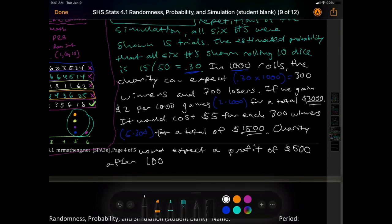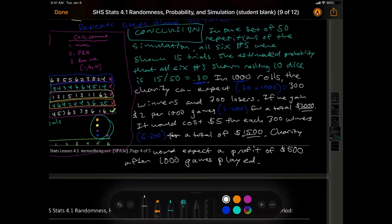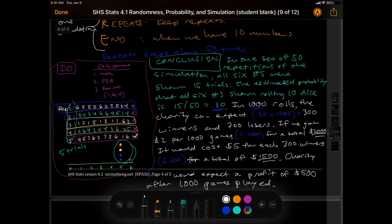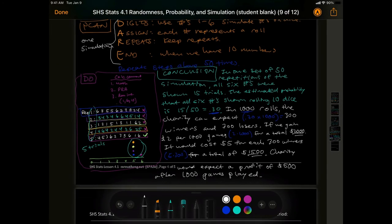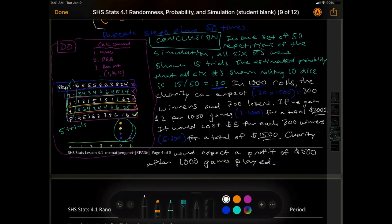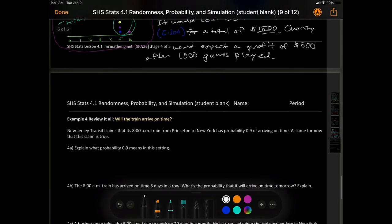Okay so what happens if we did this over one thousand rolls. In 1,000 rolls, the charity can expect 0.30 times 1,000 would give us 300 winners. But of the 1,000, that means 300 are winners and then that would be 1,000 minus 300 would give us 700 losers. So if we gain or if they gain $2 per the 1,000 games. So that would be 2 times 1,000 would give us for a total of $2,000. So that's our profit. It would cost $5 for each 300 winners. So my math on that one is going to be 5 times 300 would give us how much? For a total of $1,500. Charity would expect a profit of how much? 2,000 minus 1,500 would give us $500. After 1,000 games played. So they know Miss Ring rolls up to this charity and they're like, hey, should we actually offer the numbers? Will this work? And I would say, yes. As a mathematician, statistician, we figured out using simulation that yes, this would be profitable. Keep doing this game. Because every 1,000 games that are played, we expect to win $500. There's a profit. If it was a negative, then I would tell them, don't do it.